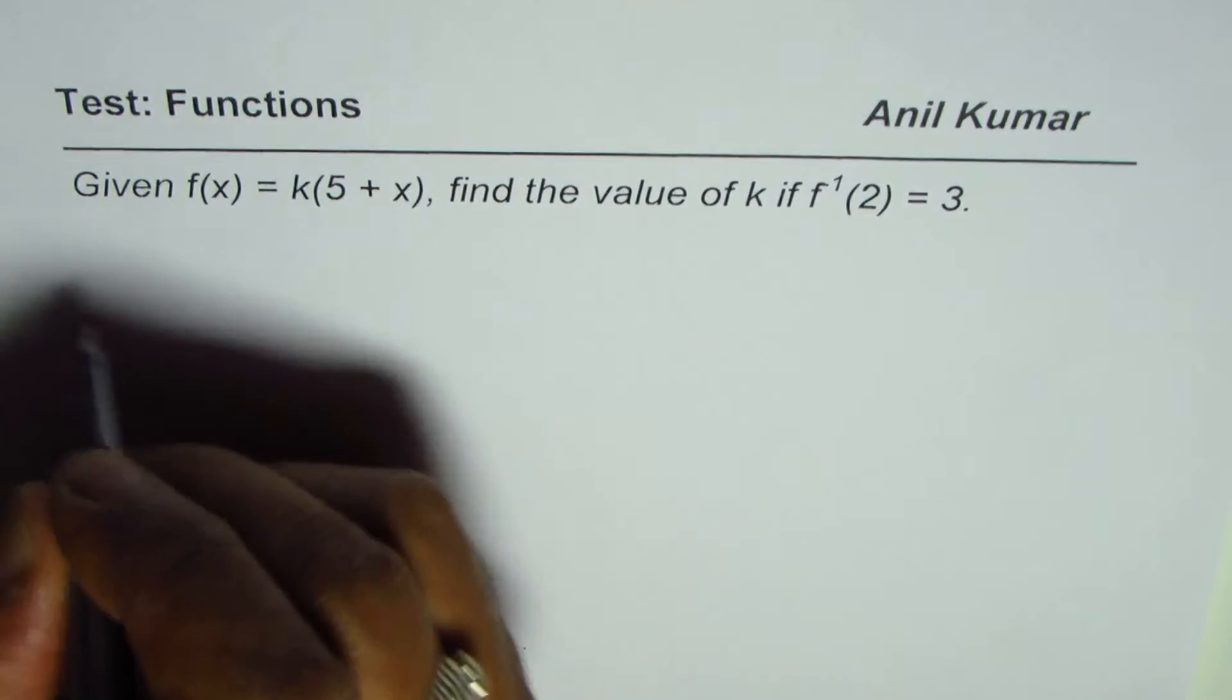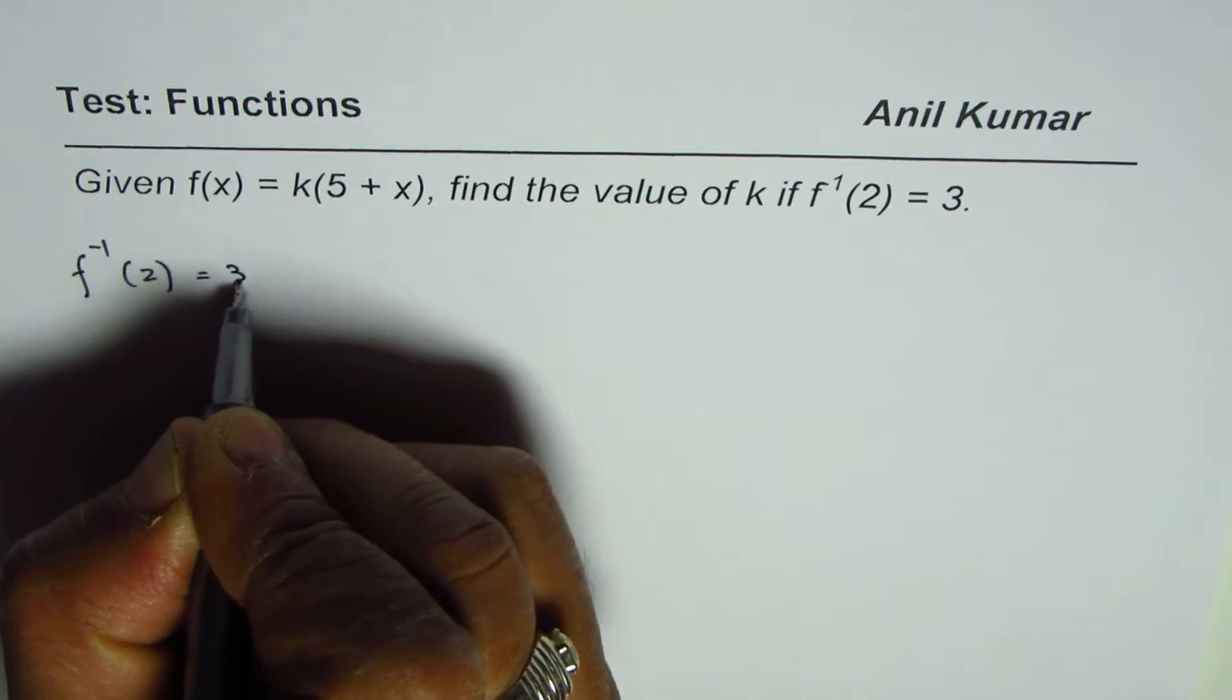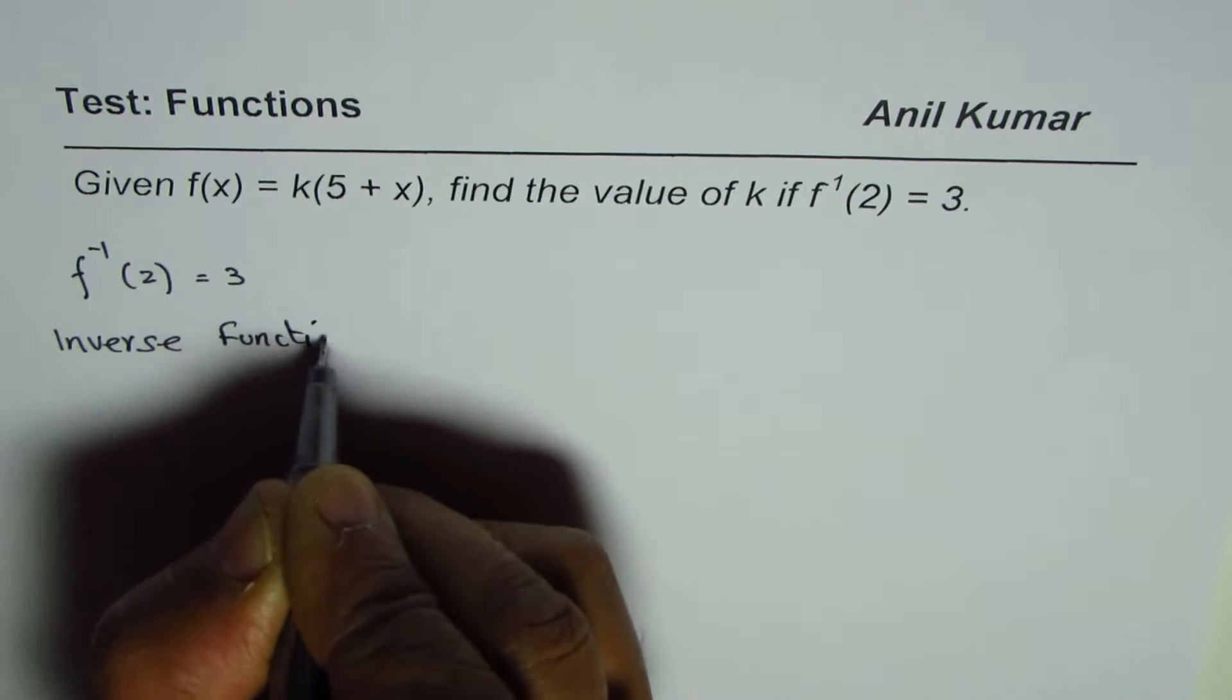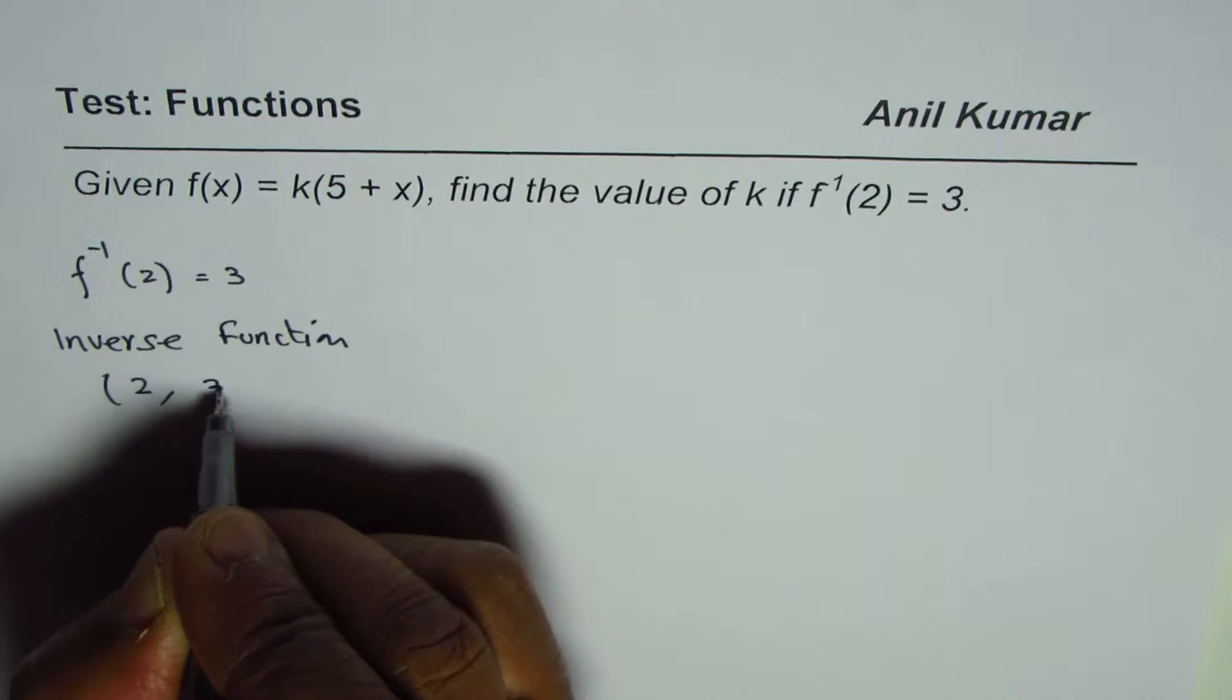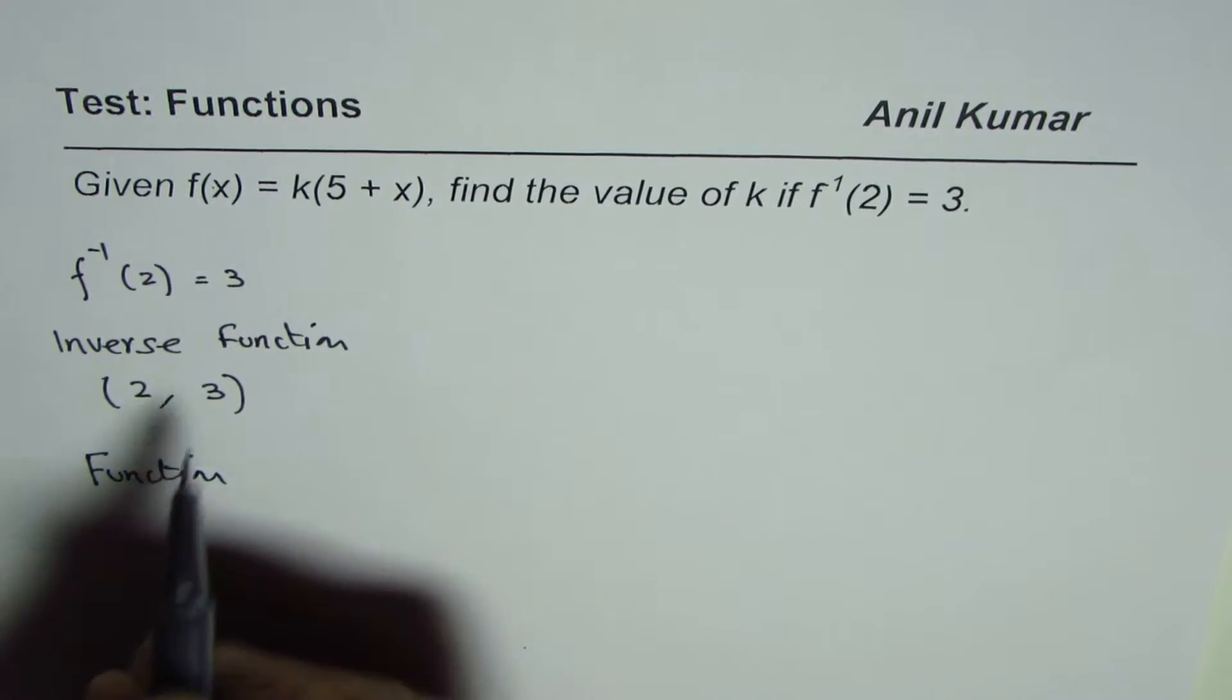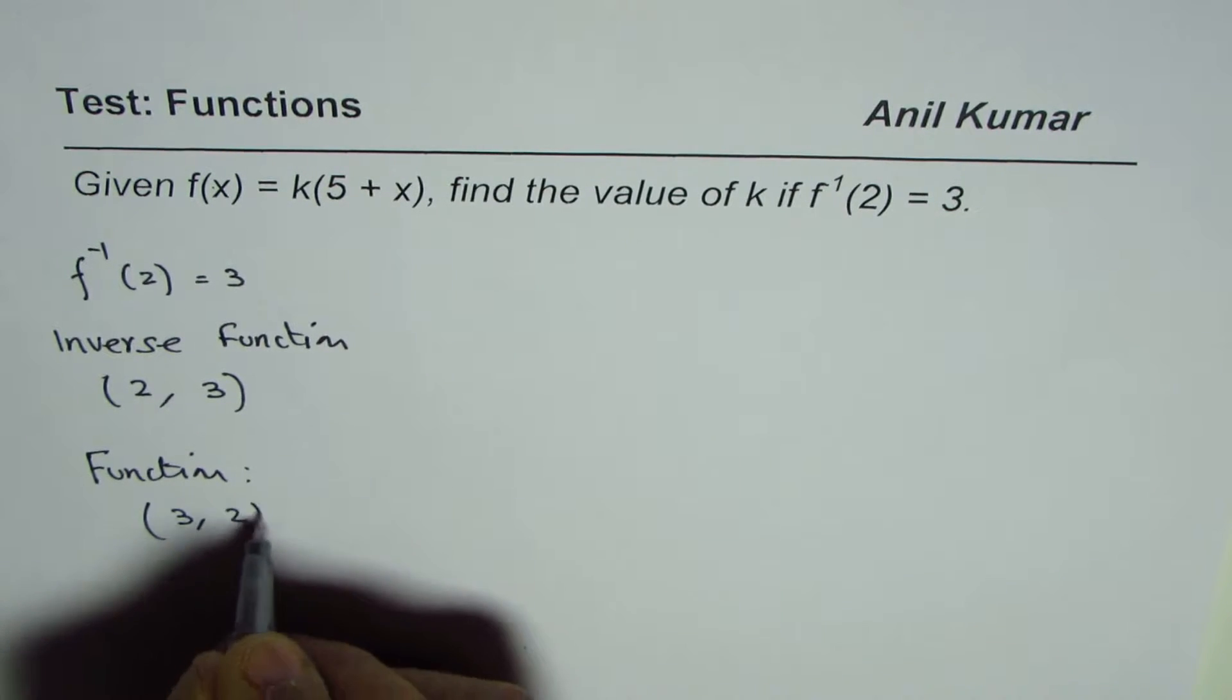What we are given here is f inverse of 2 is 3. It really means that on the inverse function we have a coordinate point where 2 is the x value and the y value is 3. That is the point (2, 3) on the inverse function. Now on the function f(x), what should this point be? On the function, the point should be (3, 2), right? It flips - swap x and y to get the coordinate point.